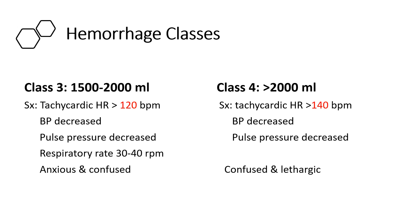In the later classes of hemorrhage — class three and class four — a good bit of blood and the oxygen contained in that blood is gone. The heart becomes tachycardic, blood pressure decreases, pulse pressure decreases, and respiratory rate increases. People are anxious, confused, and may be lethargic.